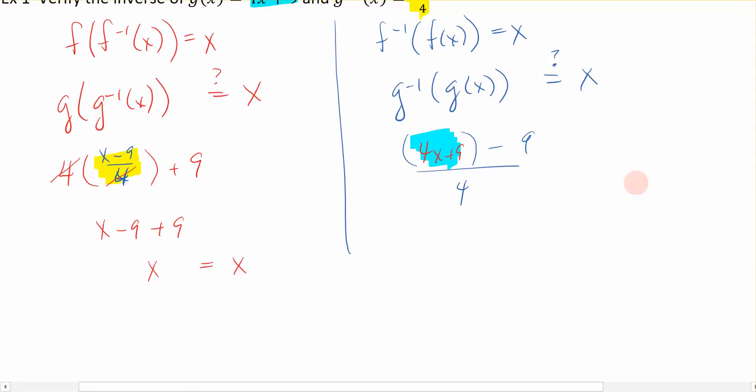And when I remove those parentheses and simplify the numerator, I get 4x plus 9 minus 9, which is just 0, all over 4.